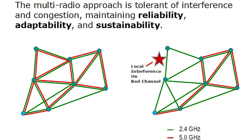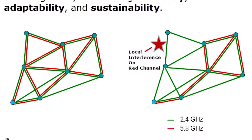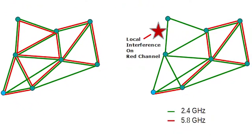This multi-radio approach is tolerant of interference and congestion. If you take a look at these two network diagrams here, let me explain for a moment how to read them. Each circle in the diagram represents a node or a breadcrumb, and each line between nodes represents a radio connection. You can see here we only show two colors of lines, and in our examples this represents two different frequencies.